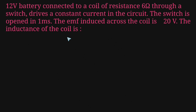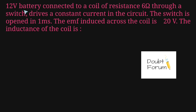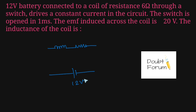Welcome to Doubt Forum. This question involves a 12 volt battery connected to a coil of resistance 6 ohm through a switch. The coil represents the inductor part, and the resistor part is also present. This coil is connected across a 12 volt battery with a switch.